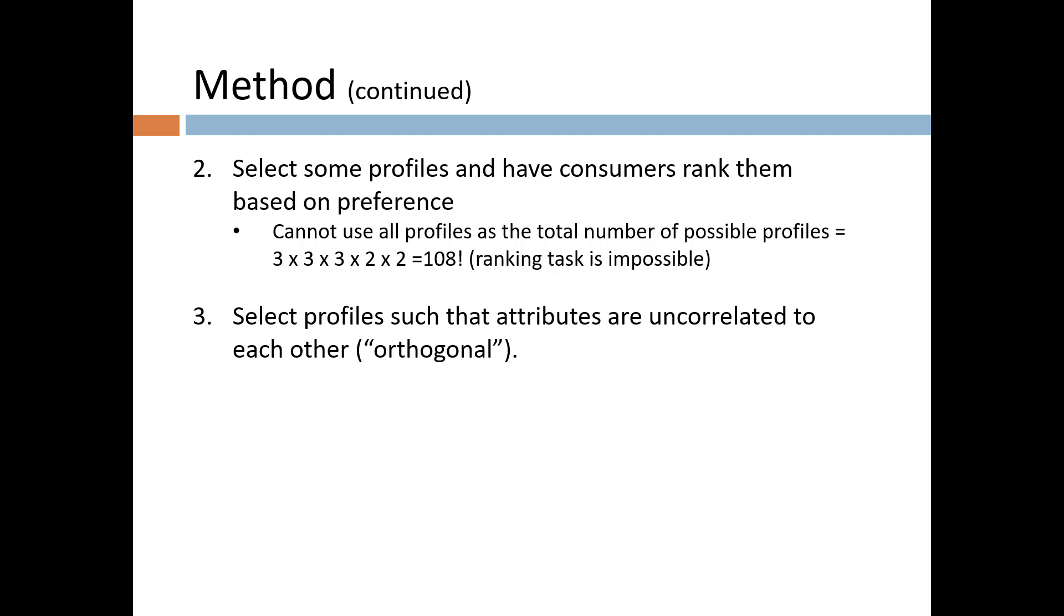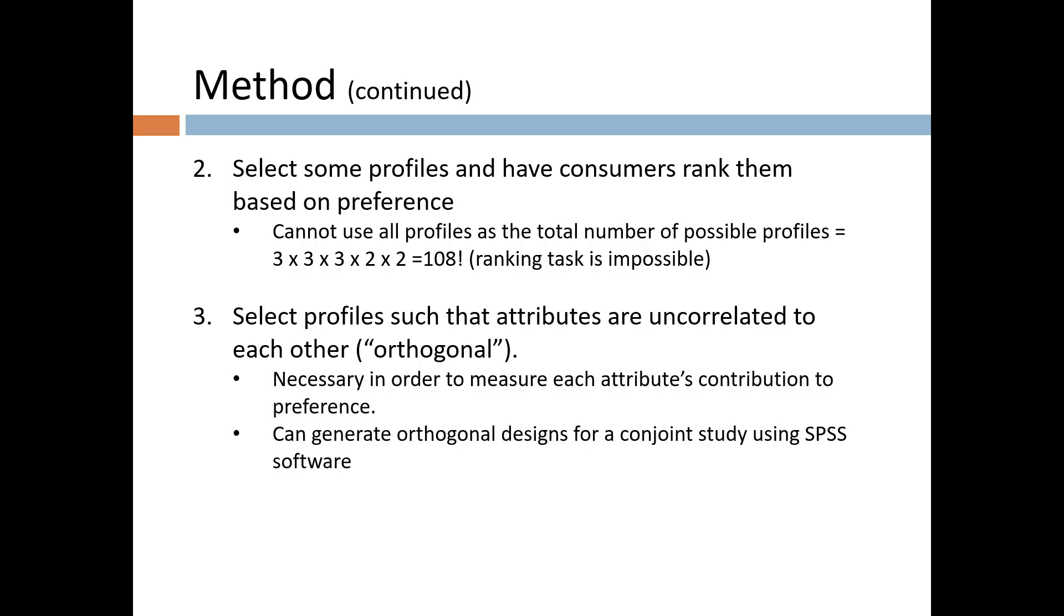So we take a subset of profiles that will yield the most information. These profiles are selected such that the attributes are uncorrelated to each other. They are referred to as orthogonal designs. This approach of taking orthogonal designs is necessary in order to most efficiently measure each attribute's contribution to preference. You don't need to find out by trial and error which designs are orthogonal because statistical software such as SPSS will generate those profiles for you.